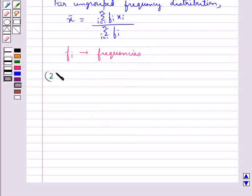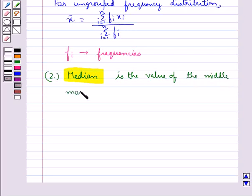The other measure of central tendency is the median. Basically, median is the value of the middlemost observation or observations.